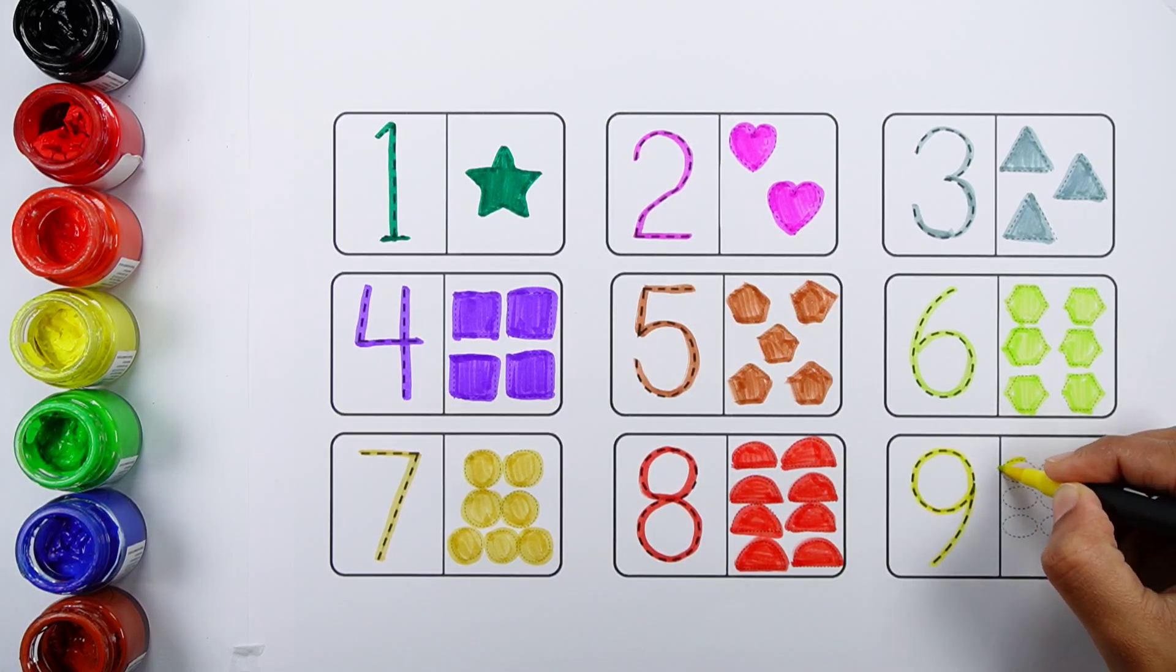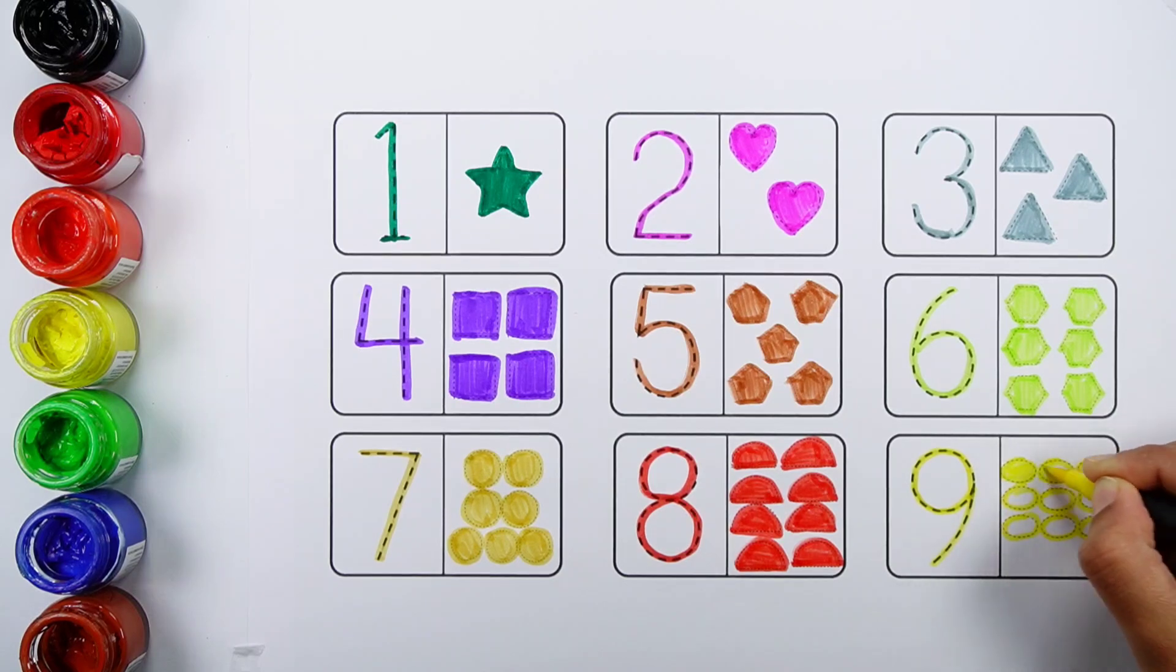Number nine. One, two, three, four, five, six, seven, eight, nine. Nine ovals.